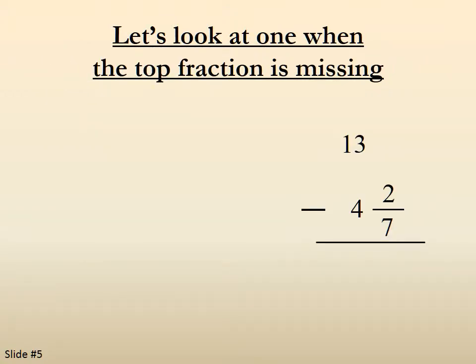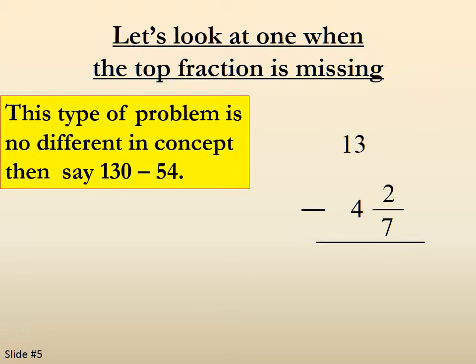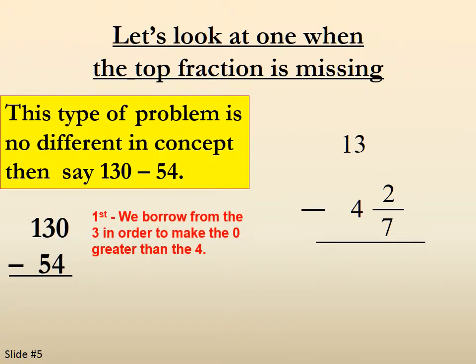Now let's look at one where the top fraction is missing. This is no different in concept than say subtracting 54 from 130. First, we have to borrow from the 3 in order to make the 0 greater than the 4.